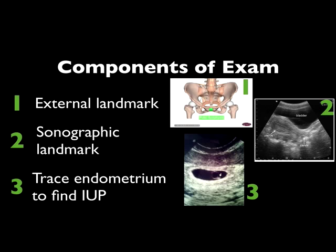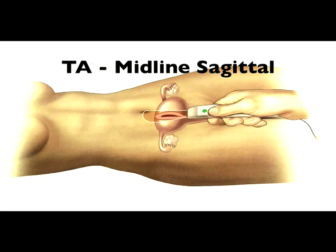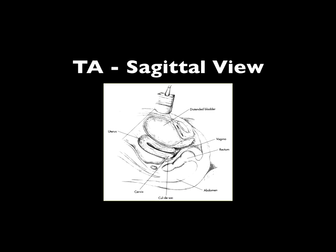If there's evidence of an intrauterine pregnancy, we'll find it by tracing the endometrium throughout the uterus. This is a diagram showing how we perform a sagittal transabdominal scan. One thing to note is that the ultrasound transducer is pointed superior towards the patient's head and that we start with the ultrasound transducer midline so that we can best identify the uterus.